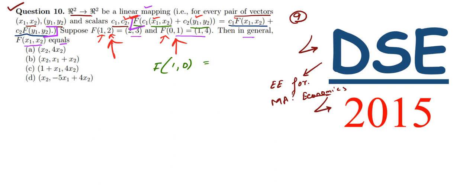I have calculated that already. You can also calculate by pausing the video, and the answer will be (0, -5). Using the linear mapping, we can calculate F(1, 0) = (0, -5).